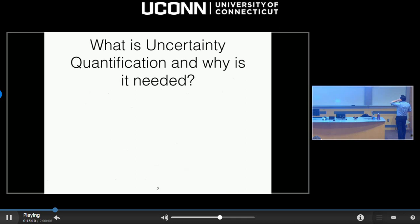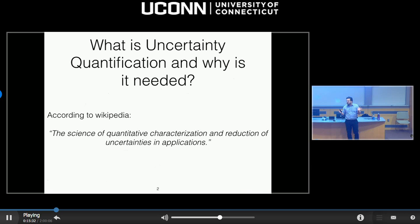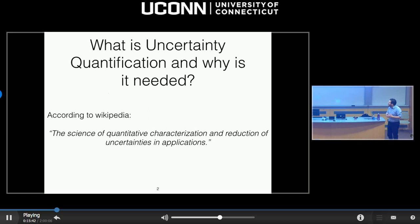So what is uncertainty quantification and why is it important? According to Wikipedia, uncertainty quantification is the science of quantitative characterization and reduction of uncertainties in applications. It's basically dealing with unknown things in your models — how do you deal with things that you don't really know, either because they're truly random, because you cannot measure them, or simply because you don't know.